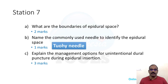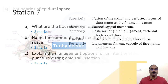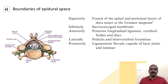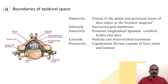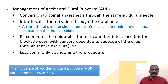Coming to station 7, which is about the epidural procedure. What are the boundaries of the epidural space? Every first-year postgraduate should be able to answer this, with diagram if required. The commonly used needle to identify the epidural space is the Tuohy needle. The space extends cranially to the fusion of the periosteal layers of duramater at the foramen magnum, and caudally to the sacrococcygeal membrane. Anteriorly: posterior longitudinal ligament and vertebral bodies. Posteriorly: ligamentum flavum, facet joint capsules, and laminae. Laterally: pedicles and intervertebral foramina.